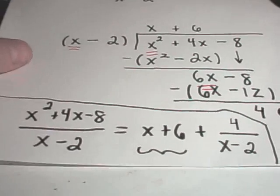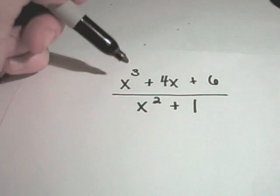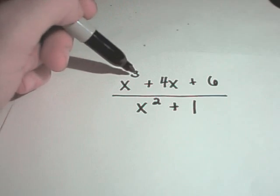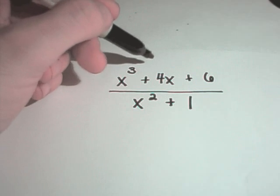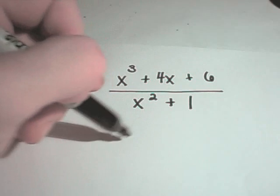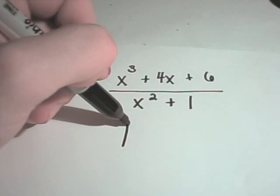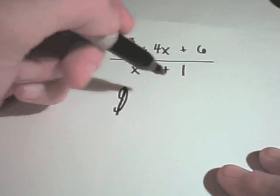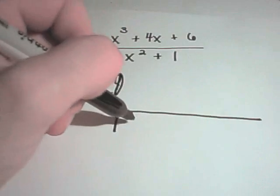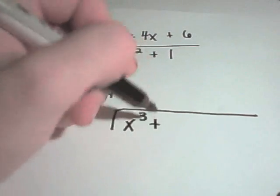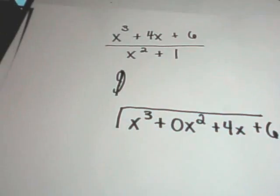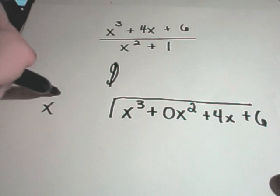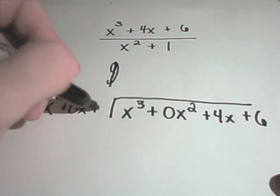Okay, so let's do maybe one more of these. So in this problem, same thing. Notice I've got things in descending powers, x cubed, x to the first, 6, and then x squared and a plus 1. But notice in the top part, there's no x squared term, and in the bottom part, there's no x term. So what I'm going to do is I'm just going to fill that in as a placeholder. So I've got x cubed plus 0x squareds plus 4x plus 6, and I'm dividing this by x squared plus 0x plus 1.